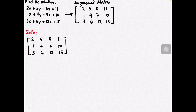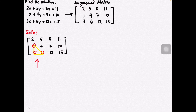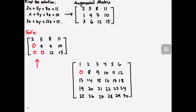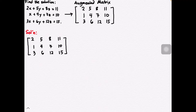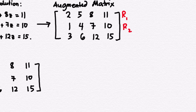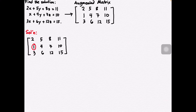Once we have the augmented matrix, we perform elementary row operations to produce a triangular array of zeros. If you have this kind of augmented matrix, the triangular array of zeros looks like this. Before starting with the elementary row operations, it is preferable to check first if the first entry is one, as that will be our pivot point.